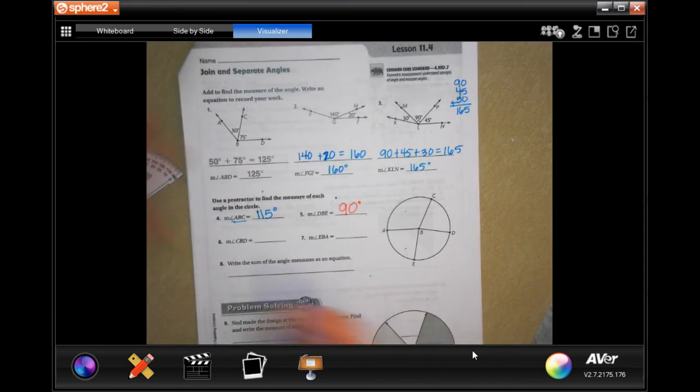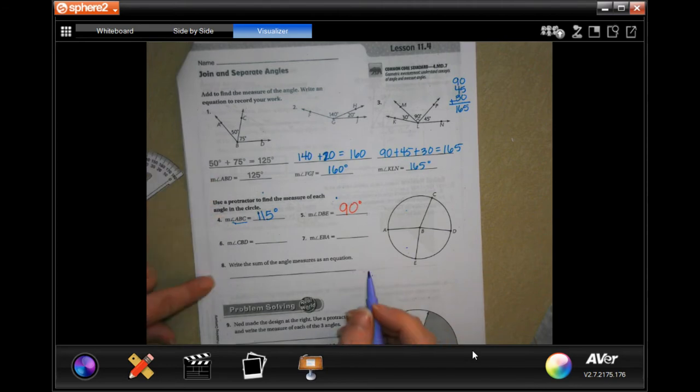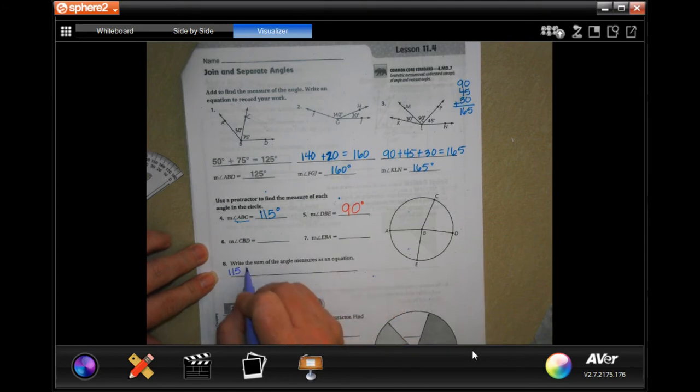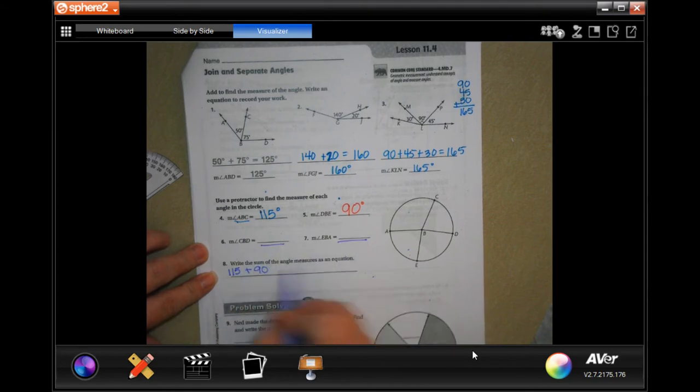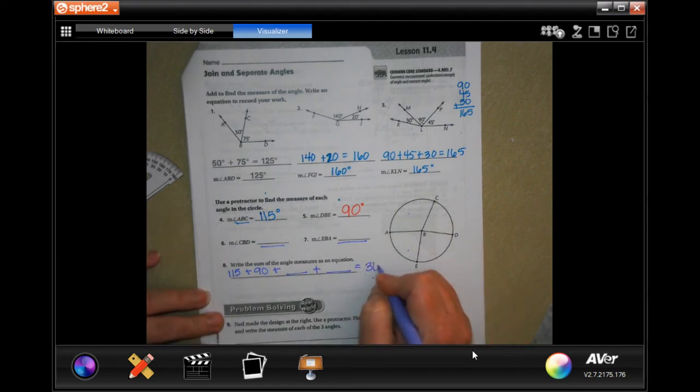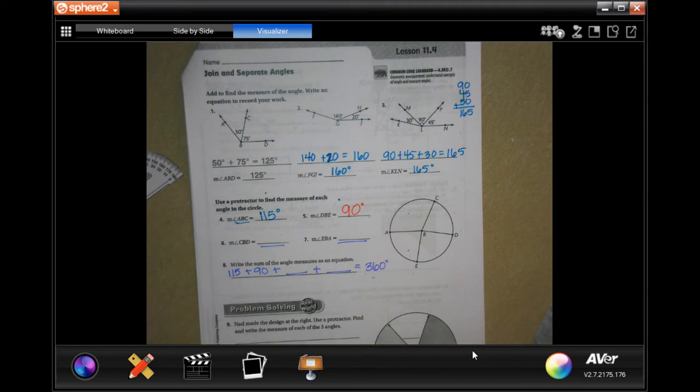I'm going to let you guys do 6 and 7. It tells you which lines to do. And your little dot here is going to go on B every time. All right. And it says to write the sum of the angle measured as an equation. So you're going to do the 115 and you're going to add that 90. And then you're going to add whatever these guys are to them. And I'm going to tell you a secret. It's a circle. So they should add up to 360 degrees.